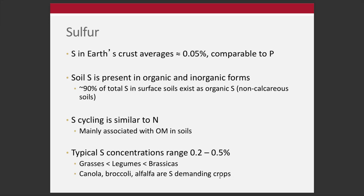Typically sulfur ranges between 0.2 and 0.5% in plants, depending on the plant, the plant part, and the stage sampled. Grasses typically have less sulfur than legumes, and legumes typically have less sulfur than brassicas — things like cabbage, broccoli, cauliflower, Brussels sprouts, which have a strong sulfur odor when cooked due to sulfur-containing compounds. Canola, broccoli, and alfalfa are all very sulfur-demanding crops.